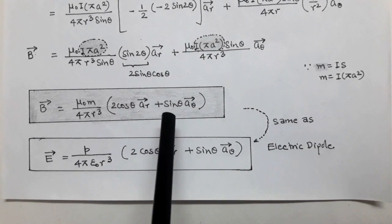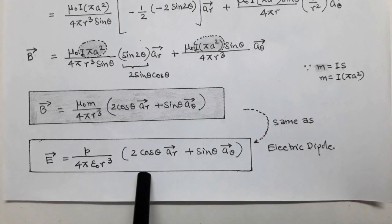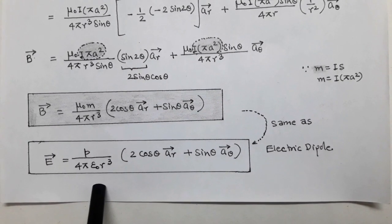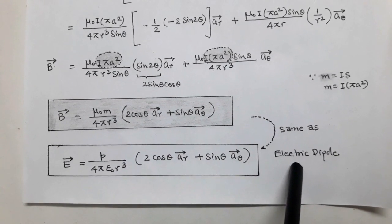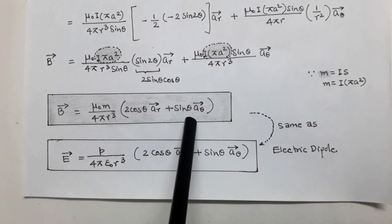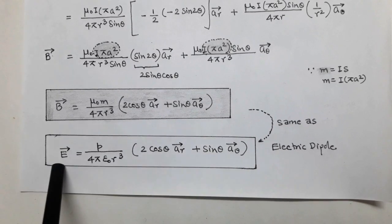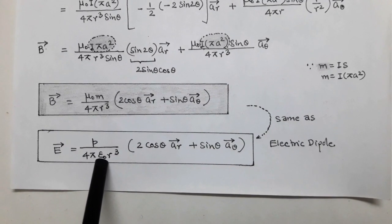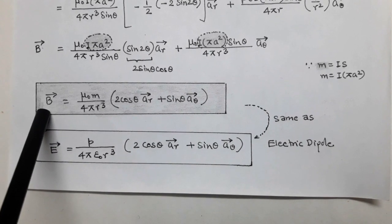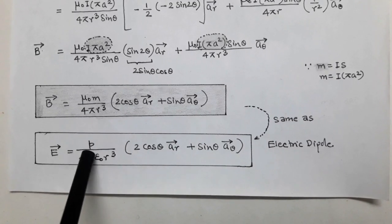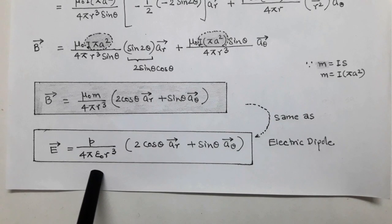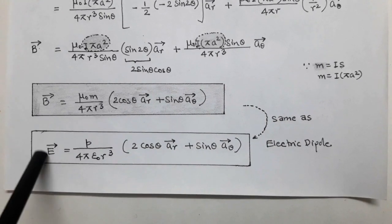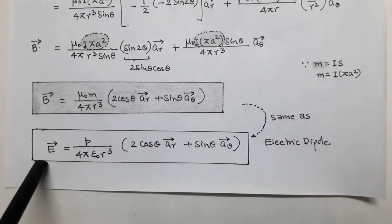The formula for magnetic flux density B⃗ = (μ₀m / 4πr³)(2cosθ r̂ + sinθ θ̂) is similar to the electric field intensity E⃗ = (p / 4πε₀r³)(2cosθ r̂ + sinθ θ̂) for an electric dipole. The key differences are: μ₀ is in the numerator for B⃗ while ε₀ is in the denominator for E⃗, and m (magnetic dipole moment) replaces p (electric dipole moment). This confirms the strong analogy between magnetic and electric dipoles.